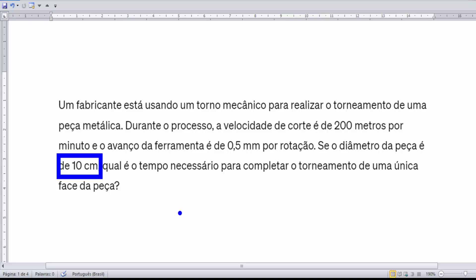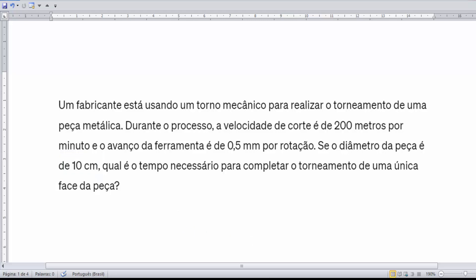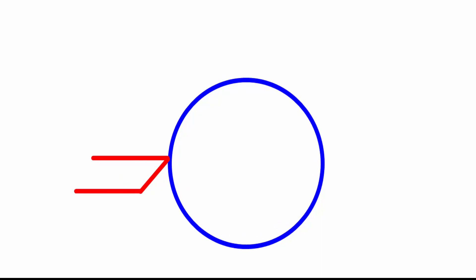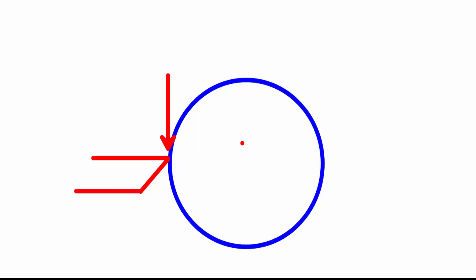A gente vai utilizar o diâmetro — essa informação é bem importante. O que acontece é que quando o processo de torneamento vai transcorrendo, ele vai iniciar, nesse caso, no diâmetro de 100 milímetros. O processo de faceamento inicia em um ponto e vai se deslocando até chegar no centro da peça, ou seja, teoricamente chegar no diâmetro zero.